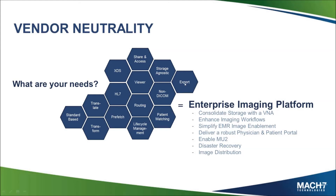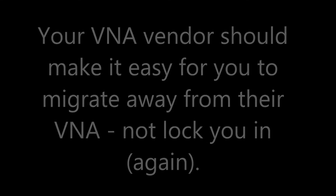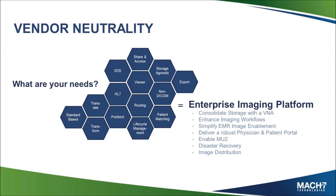The last point is really around export. No matter what VNA you pick, make sure they have strong capabilities for getting the data out. The last thing you want is to be locked into another archive for the next seven-plus years. Even at Mach 7, if you buy the archive and decide to move on five years from now, you're not locked in. It's a matter of mouse clicks to get the data out, to schedule it to be exported between chosen hours — 2 a.m., 6 a.m. — and prioritizing through prefetch-similar functionality. If a patient comes in, it can identify that and prioritize those exports to the top of the queue. No matter what VNA vendor you pick, make sure you're not getting locked into another archive — it should be simple to get the data out.